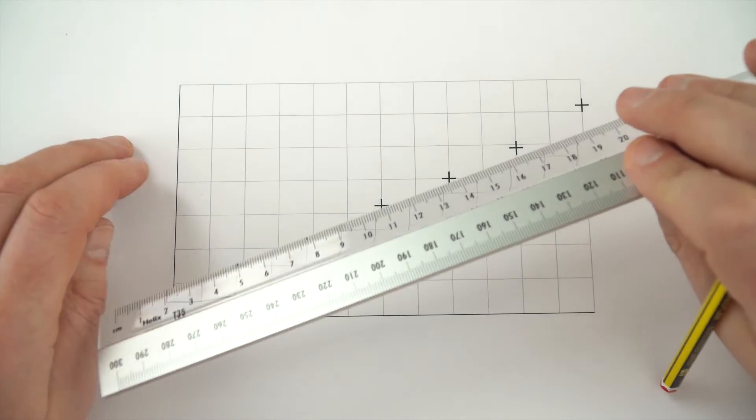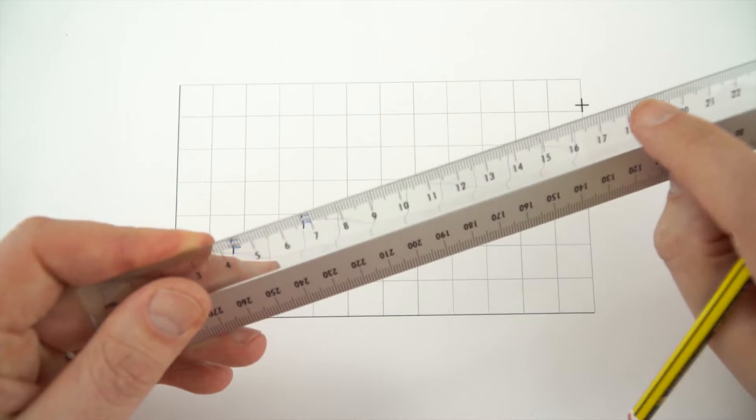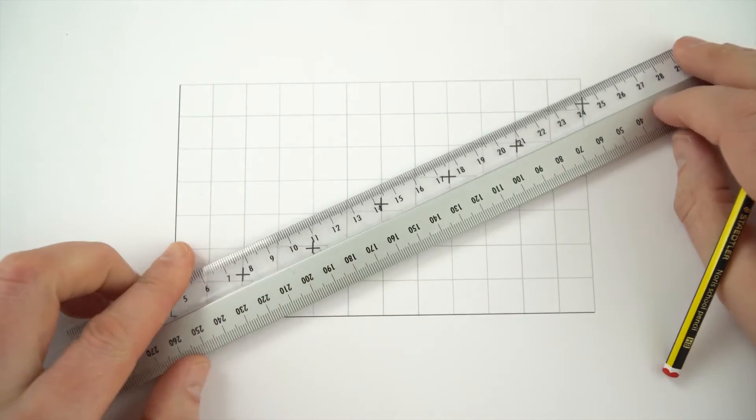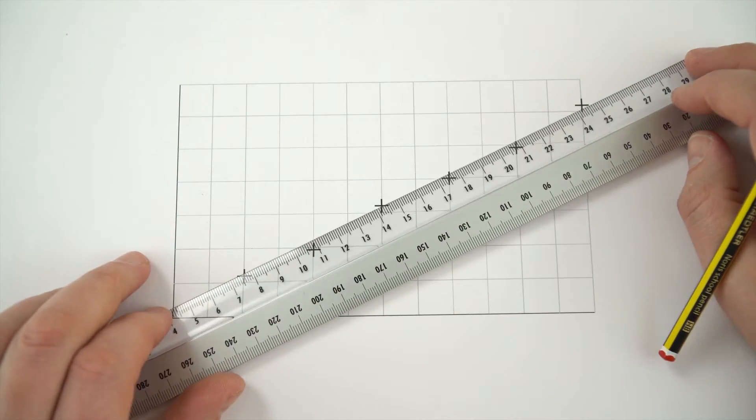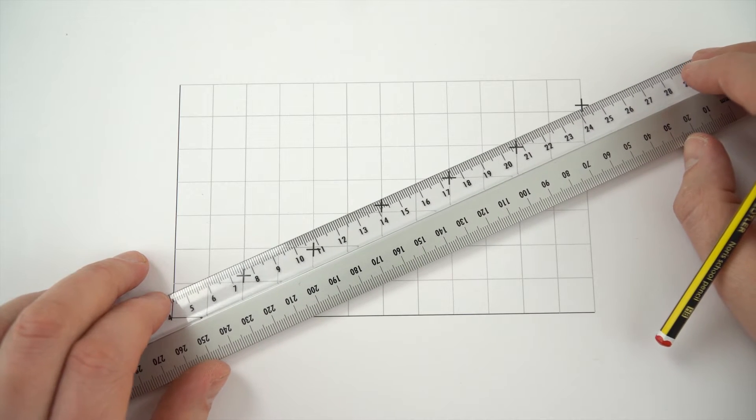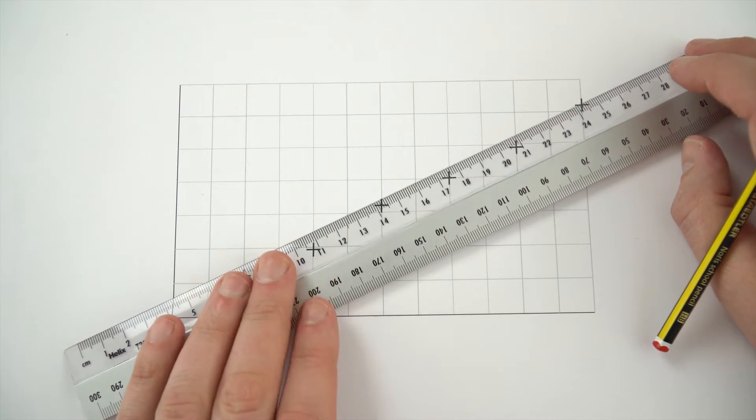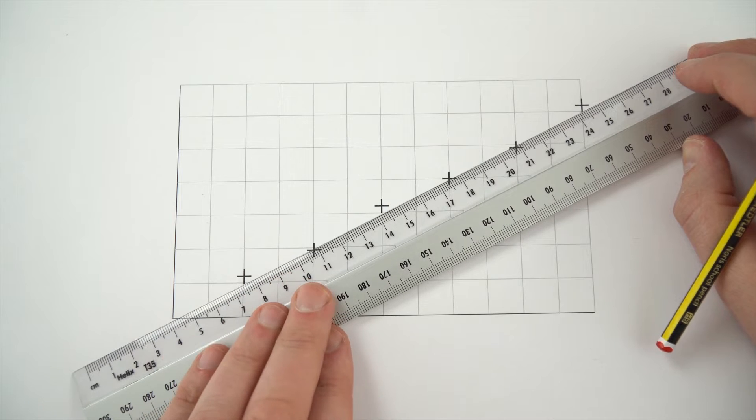The best way to get this line of best fit is to use a transparent ruler, and this then allows you, when you've put it on your points, to see how many points are above and below that line. Now this one here, it looks like we're going to go through the origin.